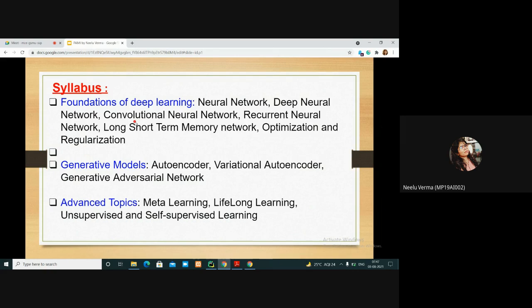Then I will move to generative models that will cover autoencoder, variational autoencoder, and generative adversarial network.